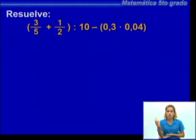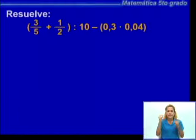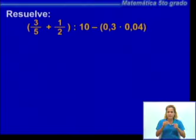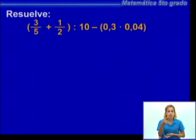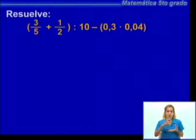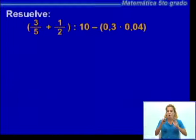La segunda actividad es un ejercicio combinado donde quiero analizar la manera en que se pueden resolver. Se combinan las operaciones de cálculo con el signo de agrupación que es el paréntesis: tenemos la adición, la división, la sustracción y la multiplicación. Y observen que tenemos números naturales, expresiones decimales y fracciones comunes. Es decir, integra todos los contenidos que hemos venido trabajando. Una de las vías para resolver un ejercicio combinado es respetando el orden operacional, es decir, la prioridad que tienen las operaciones.